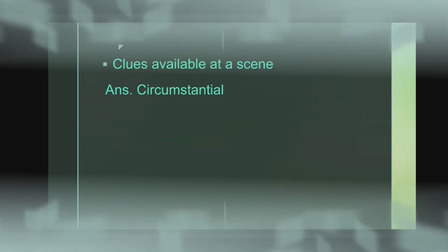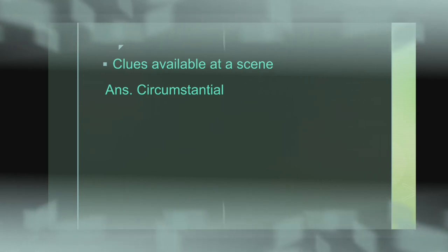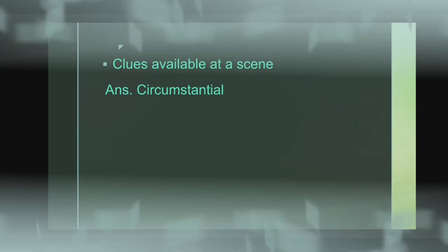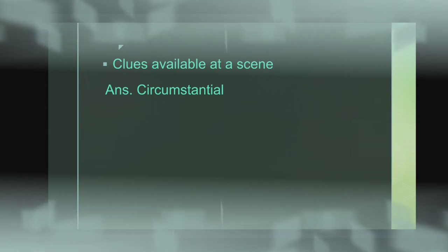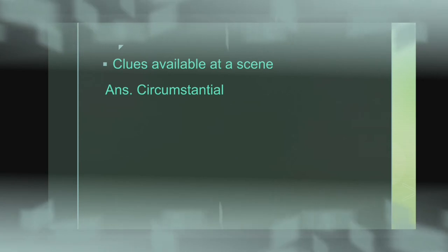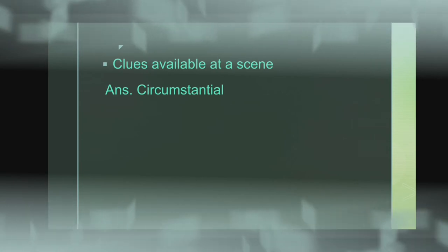Clues are available at the scene. When we see that police are going to a car and some people are at the scene, then we can refer to this situation. Clues are available at the scene. The answer is 'Circumstantial'.